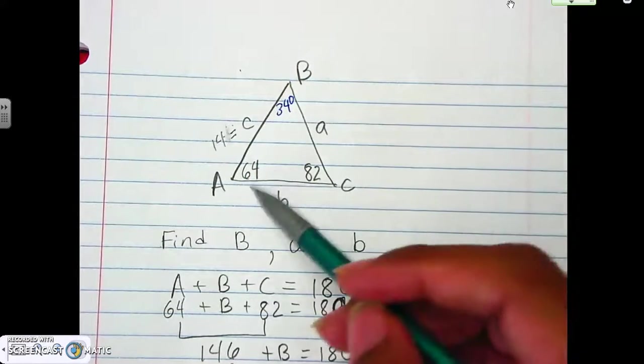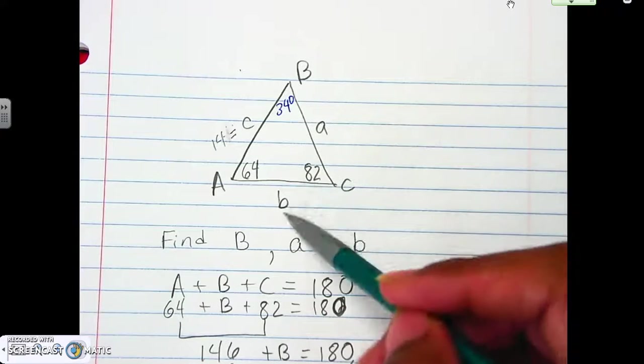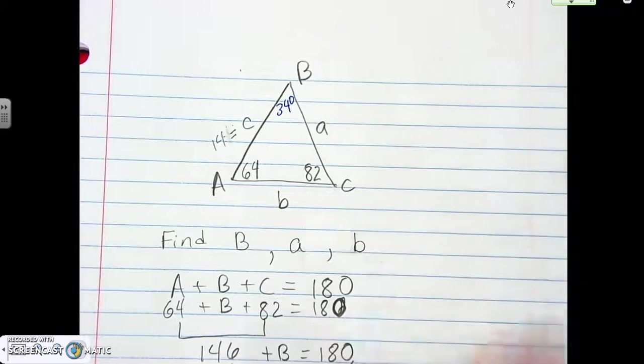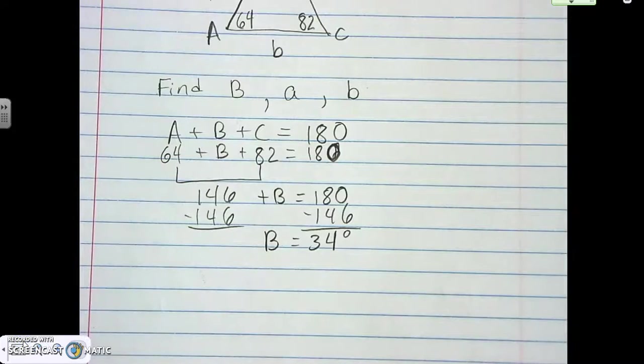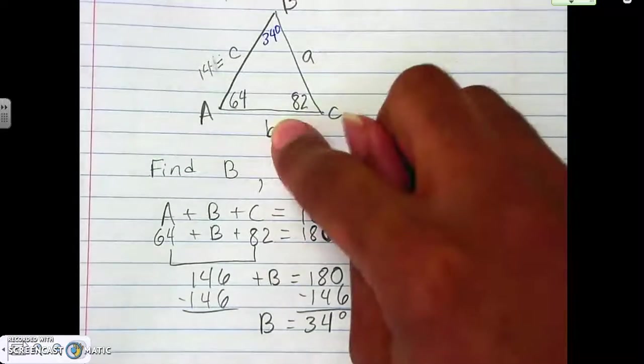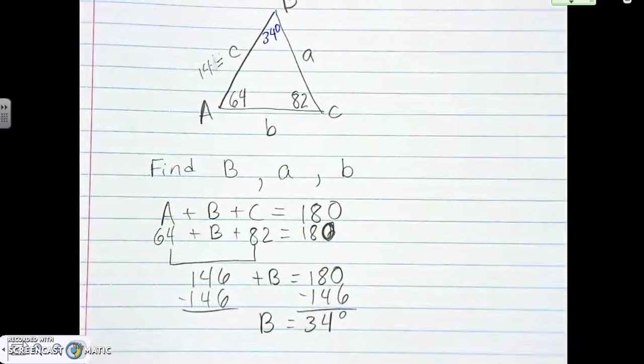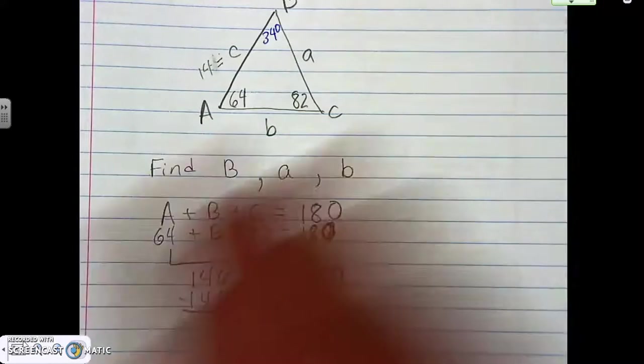All right, so now we have all of our angles. We need to find A and B. So that means we need to deal with our law of sines, law of cosines. All right, so here is the angle B there. So we have all the pieces that we need except for B and A. So now we need to do our law of sines to be able to do B and A now.